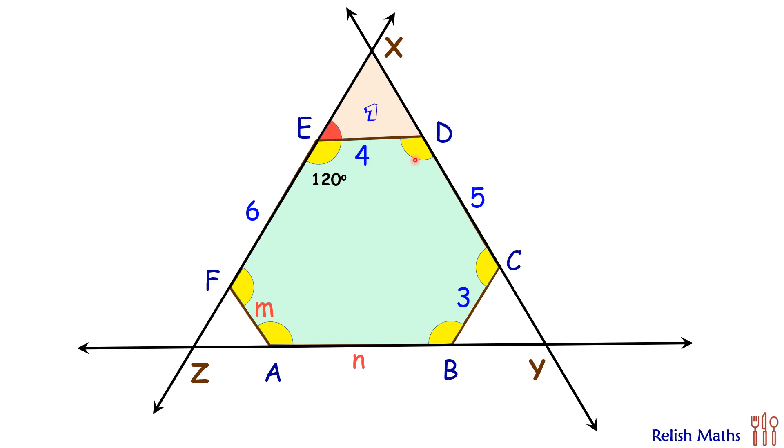Similarly, angle D is 120 degrees, so this angle is 60 degrees, and the remaining angle is also 60 degrees. Therefore, triangle 1 is an equilateral triangle, so these side lengths will be 4 and 4.